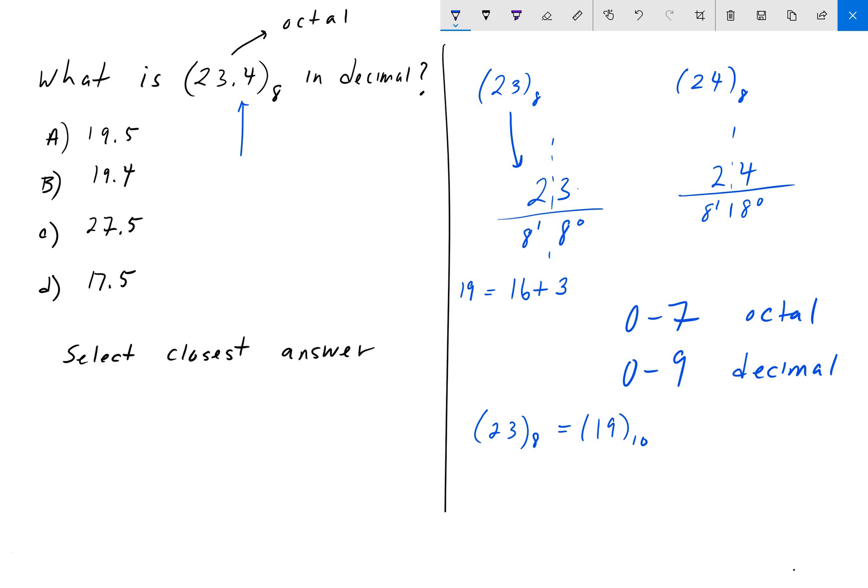For this, 8 to the 0 is 1 times 4, which is 4. Then you're going to add it to 8 to the 1, which is 8 times 2, which is 16. This gives us 20, and so that tells us that 24 in base 8 is equal to 20 in decimal.